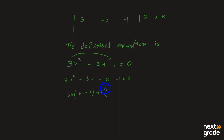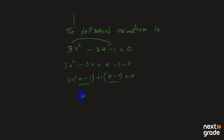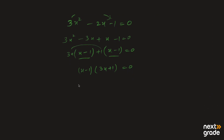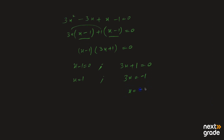تو ہمارے پاس آئے گا (3x + 1)(x − 1) = 0۔ Either x minus 1 = 0 یا 3x plus 1 = 0۔ x minus 1 = 0 سے x = 1 آئے گی، اور 3x plus 1 = 0 سے 3 right side پر جا کر divide ہوگا، تو x = minus 1/3 آئے گی۔